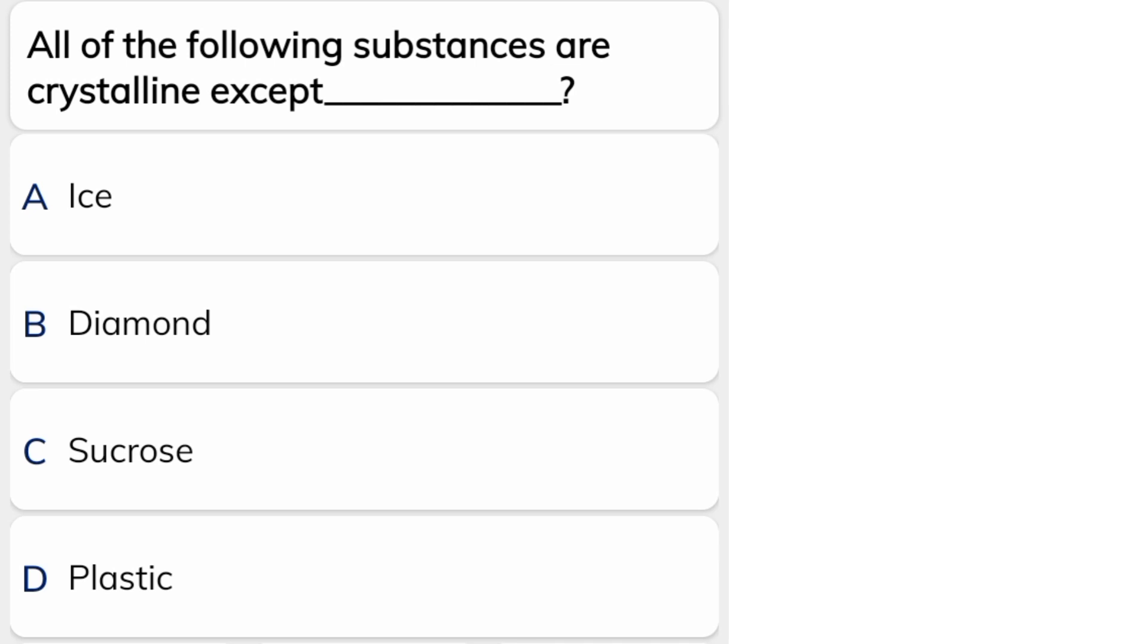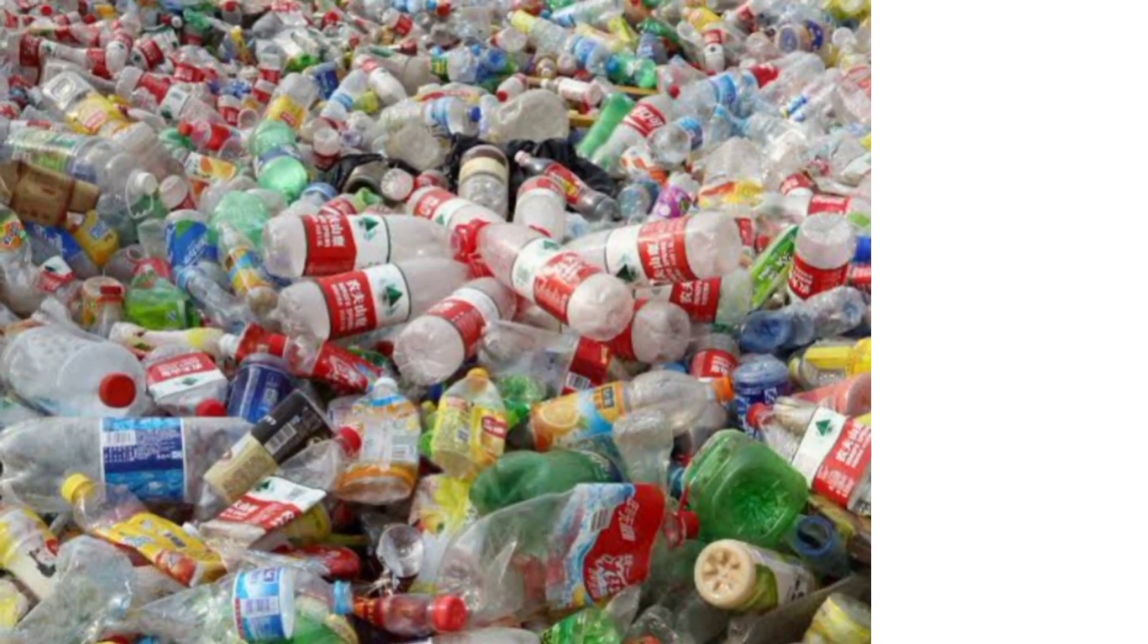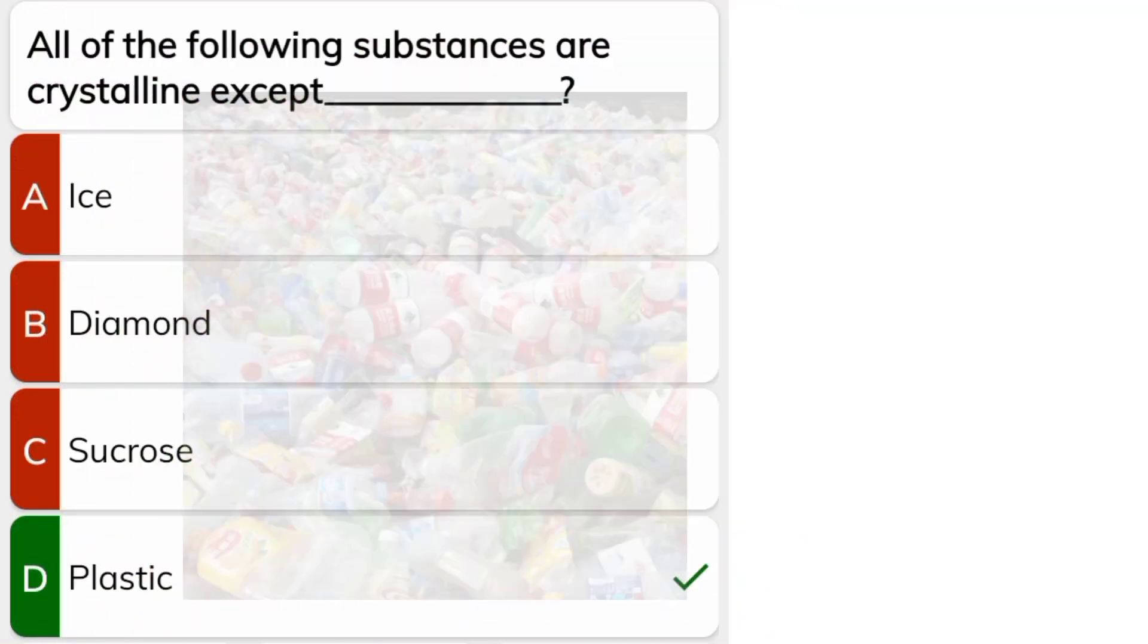All of the following substances are crystalline except - the correct answer is D, plastic. Ice, diamond, and sucrose, these three are in crystalline form.